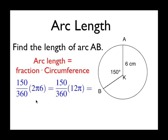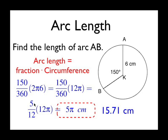So the 150 over 360 does simplify to 5 over 12 and the 12s cancel out giving us an answer of 5π centimeters. If you convert this to decimals it would be 15.71 centimeters.